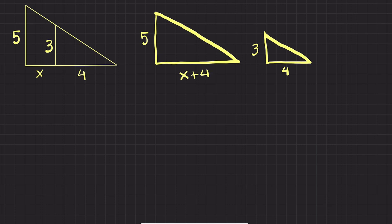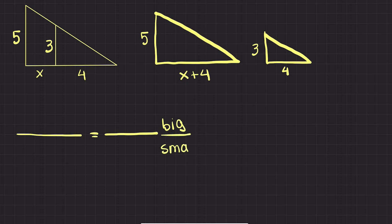Now I'm going to write my proportion. Everything that belongs to the big triangle I'm going to write on top, and anything that has to do with the small triangle I'm going to write on the bottom. You can do it the other way around, as long as you keep the same things on the same side of the equal sign.